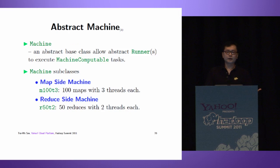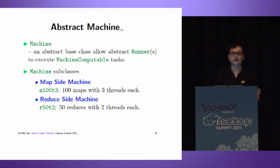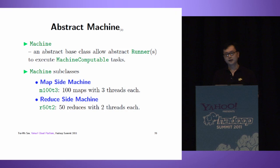With this framework, we have an abstract class called Machine. Machine allows abstract runner to execute machine computable tasks. Everything is very abstract. We have concrete machine subclasses: map-side machine and reduce-side machine. For example, we may specify a machine by M100T3 - it launches a job with 100 maps, and each task uses 3 threads to execute the computation. Similarly, R50T2 executes a reduce-side job containing 50 reducers, each task using 2 threads.